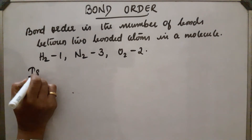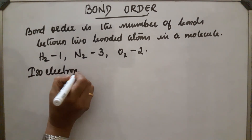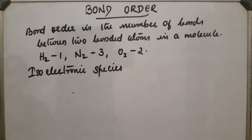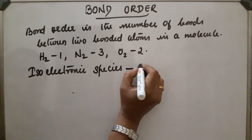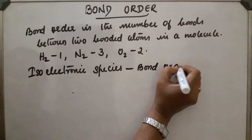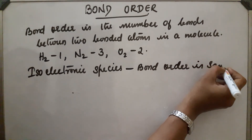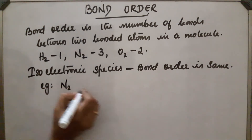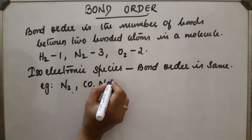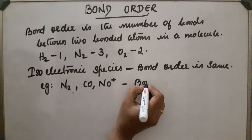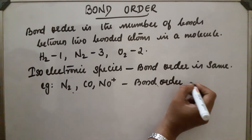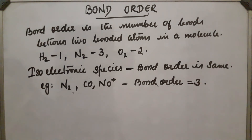In the case of isoelectronic species — compounds containing the same number of electrons — the bond order will be the same. For example, N2, CO, and NO+ all have a bond order of 3, with N triple bond N, C triple bond O, and N triple bond O.